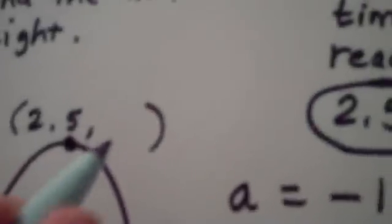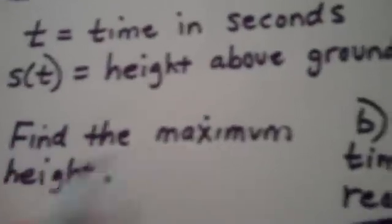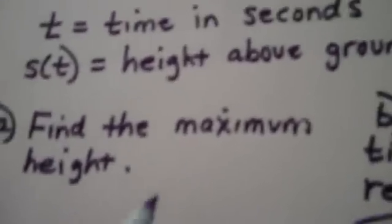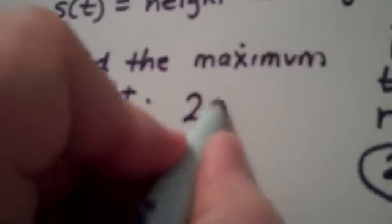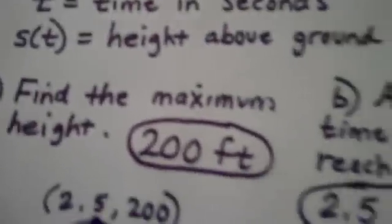And of course, remember, that's the output, the second coordinate of the vertex, and that represents my maximum height. My maximum height is 200 feet. And we're done.